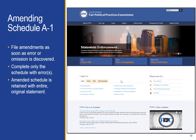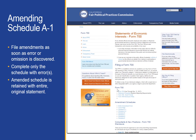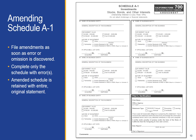If after submitting your completed statement you discover that you have made an error or left off a reportable interest, you should amend your statement as soon as possible. You do not need to complete the entire form again, only the schedule or schedules where there are errors. Amendment schedules are located on the Form 700 page. Please note that the amendment will be attached to your original statement and that your original statement will not be discarded.